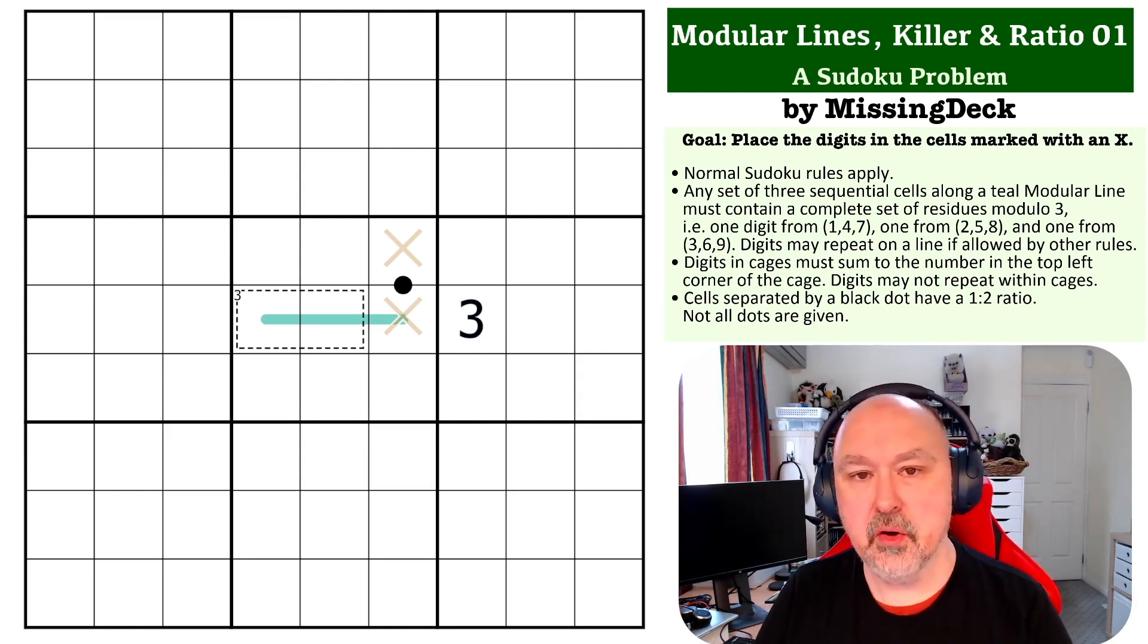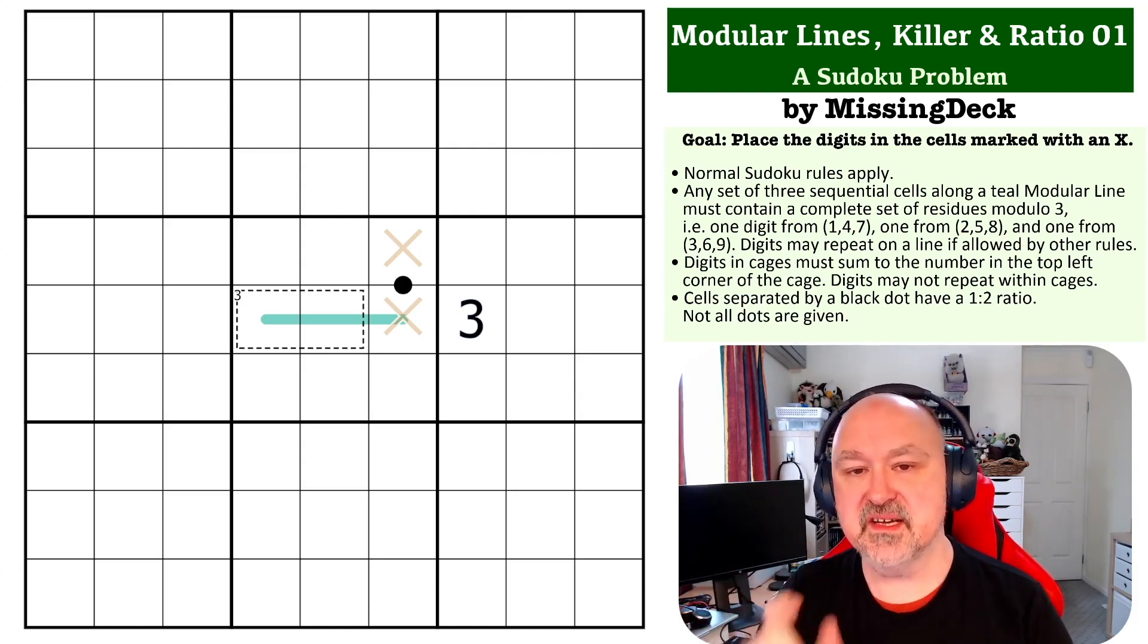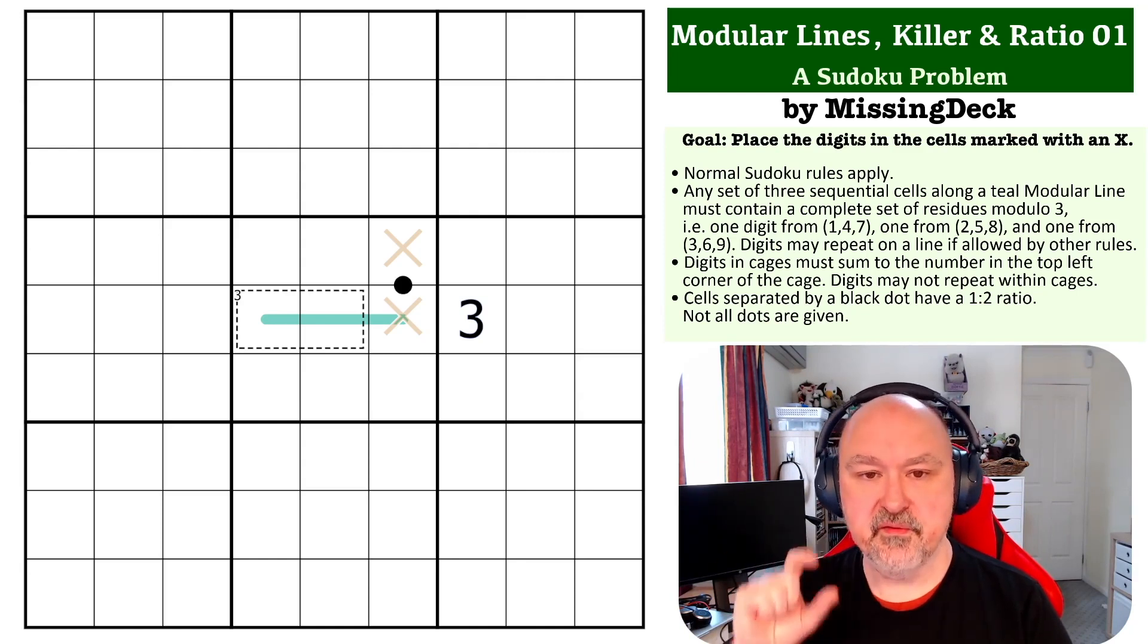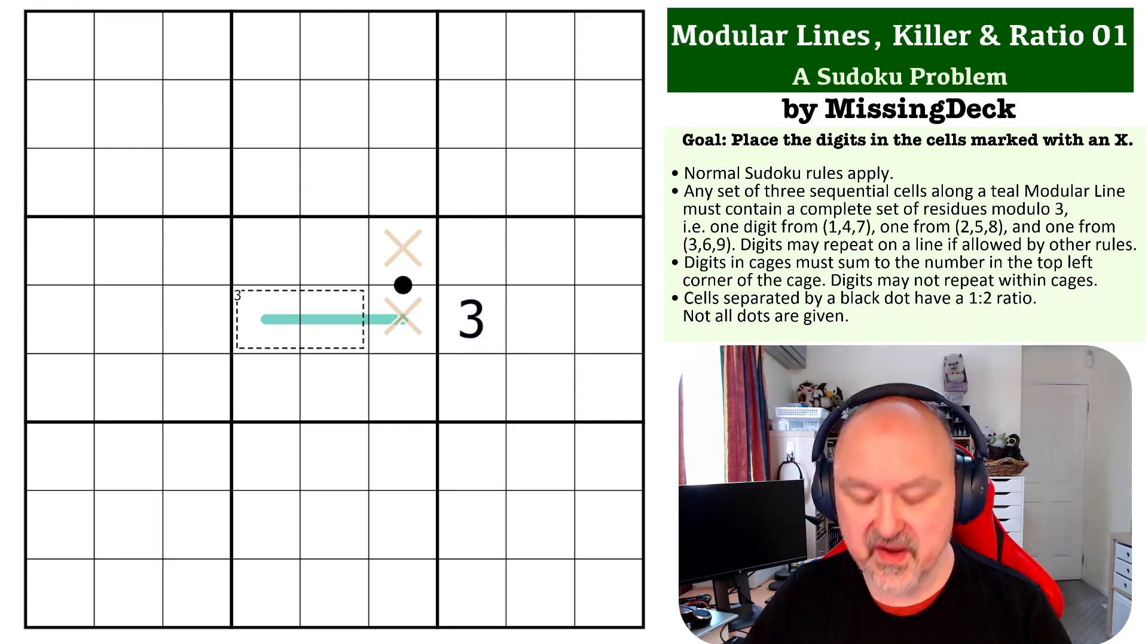Along modular lines, any set of three sequential cells along the line must contain one cell from the set 1-4-7, one from 2-5-8, and one from 3-6-9.